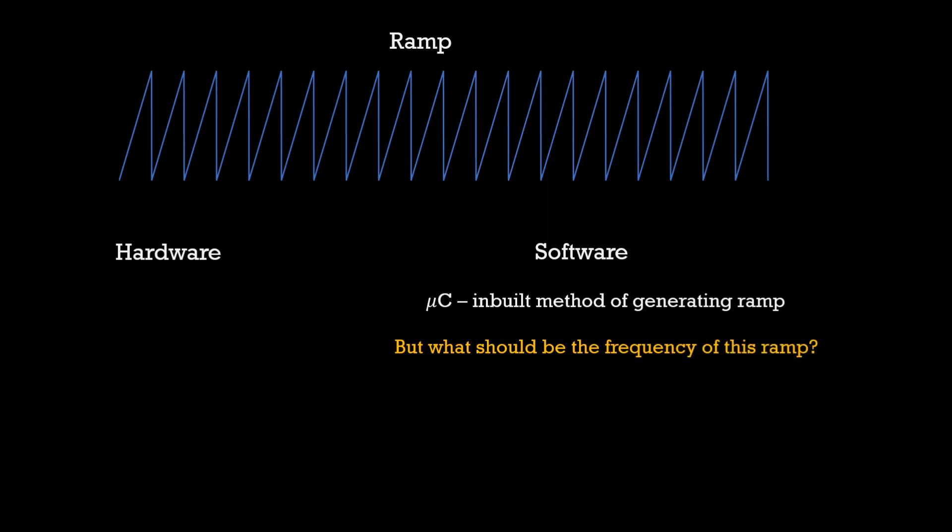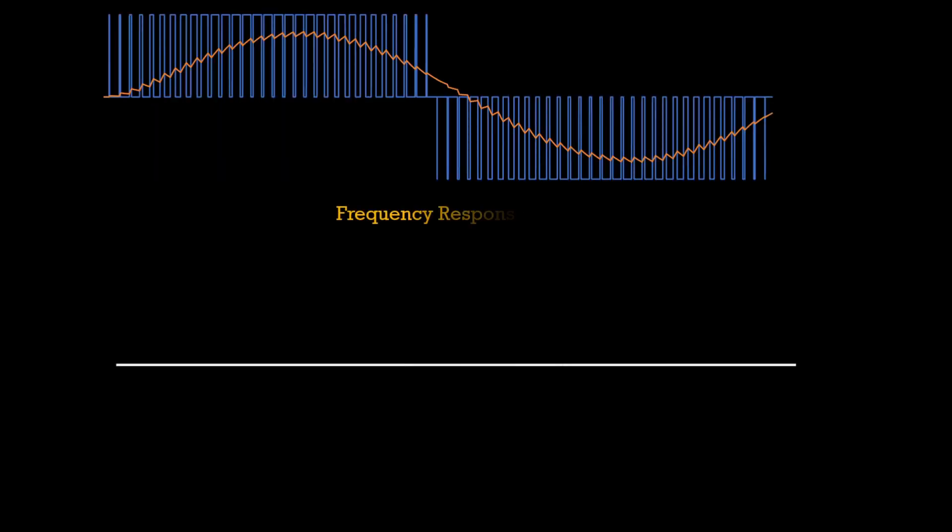Generally, this ramp signal is of very high frequency from kilohertz level to even megahertz in recent times. For motor control, this value is usually between 10 to 20 kilohertz. But why do we need such a high frequency? Let us answer that. We need to check out the frequency response of this waveform.